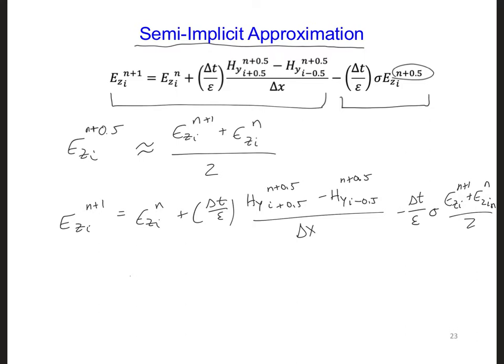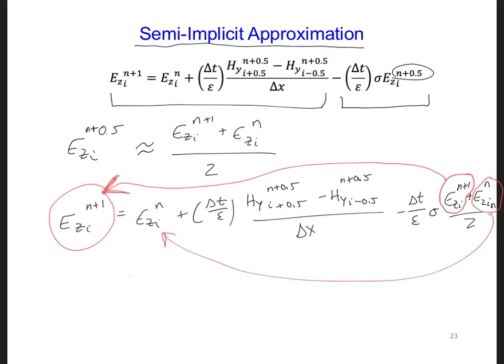It turns out we can't yet. And that's because the future value of Ez at n plus 1 appears on the right side of our equation. But that is the value we want to solve for. So we need to take this term and combine it with this one. And similarly, we can take this second Ez term and we can combine it with this one.